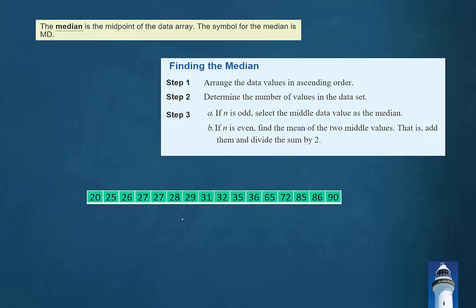Here we have a data set with 16 data values, so we'll have to use part B of step three to find the median. We have an even number of data values, so what we'll do is find the average of the middle two.